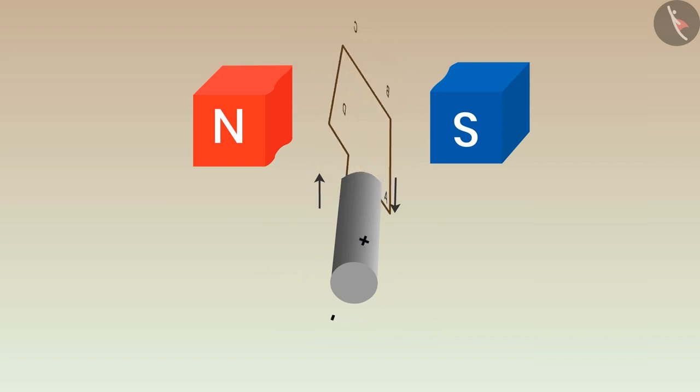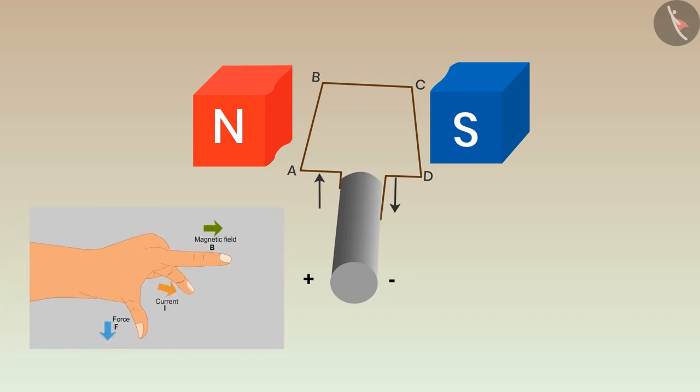If we apply Fleming's left hand rule on the arm AB of the coil, then we get the direction of the force exerted on this arm by the magnet. We know that the direction of the magnetic field is from north to south.